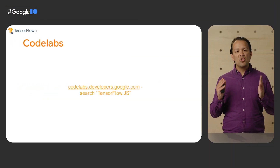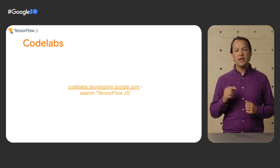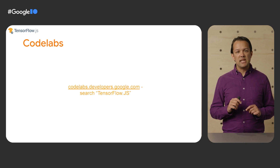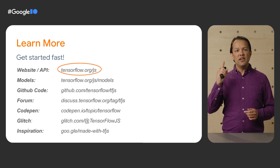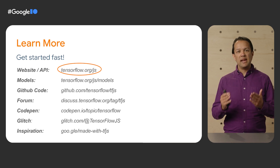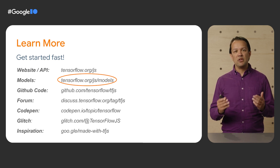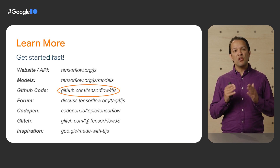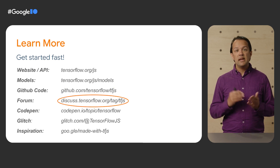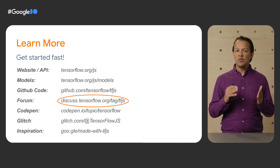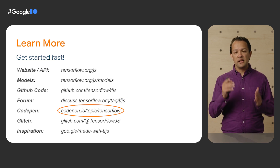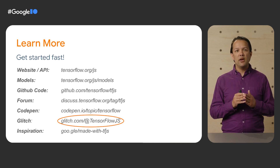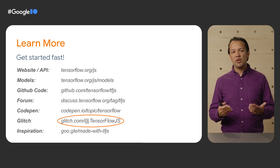I'd like to leave you with a few resources to get started or go further with TensorFlow.js. Check out our growing collection of Codelabs at codelabs.developers.google.com — simply search TensorFlow.js to find step-by-step guides from the TensorFlow.js team. You can find our official website and full API at the top link, or check out even more pre-made models using the second link. View our open source code on GitHub and even make a contribution — we are fully open source. Check out the official TensorFlow forum to ask technical questions, monitored by the TensorFlow.js team; just remember to tag your post with tfjs. We've also got code examples you can fork in minutes over on Glitch.com and CodePen.io that provide working boilerplate code to get started really fast.